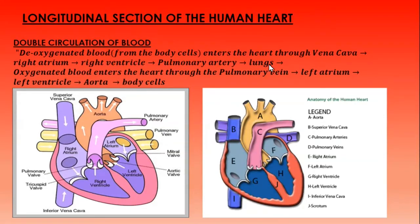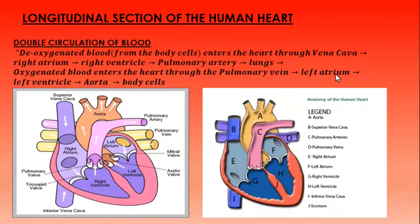At this point, the blood is no longer called deoxygenated — it is now called oxygenated blood. The oxygenated blood enters the heart through the pulmonary vein. Remember: arteries carry blood away from the heart; veins bring blood towards the heart. It enters the left atrium, then the left ventricle, and with pressure it is pumped into the aorta — the largest artery of the body — which transports blood to all the body cells.